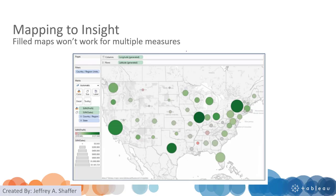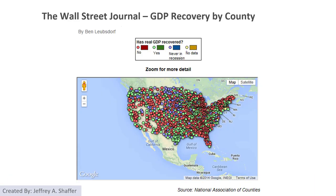But proportional symbol maps are very common. Here is one example using the proportional symbol map to show the values. And this is a terrible example — it's actually a dot map where each single dot represents the location of GOP votes recovered by county. So this is actually a terrible dot map.